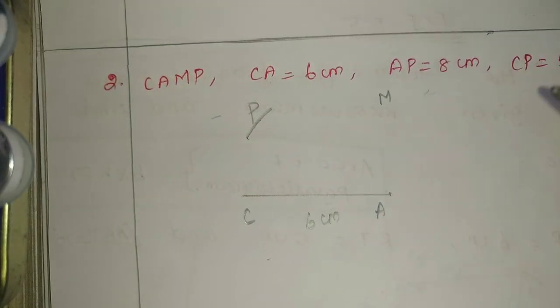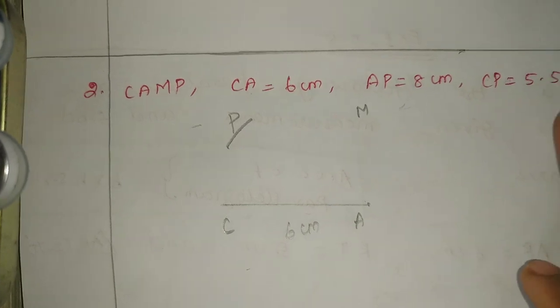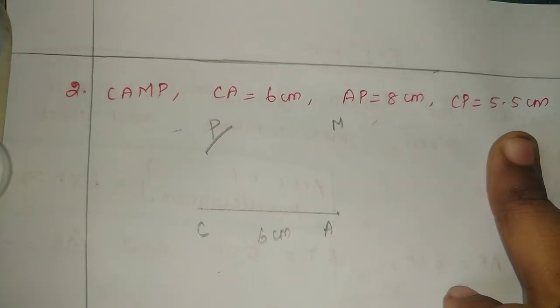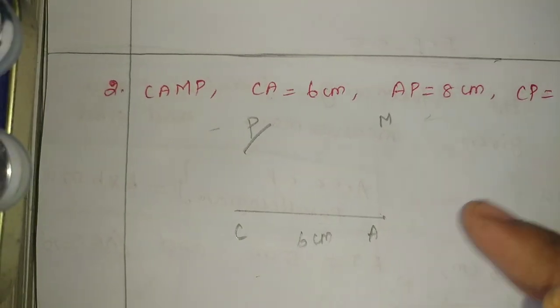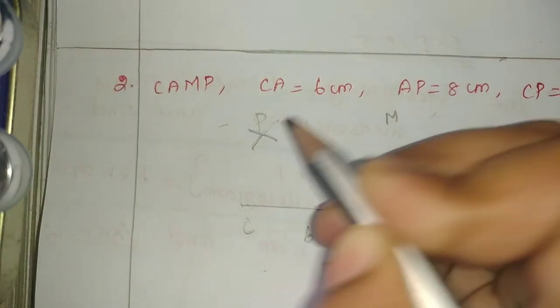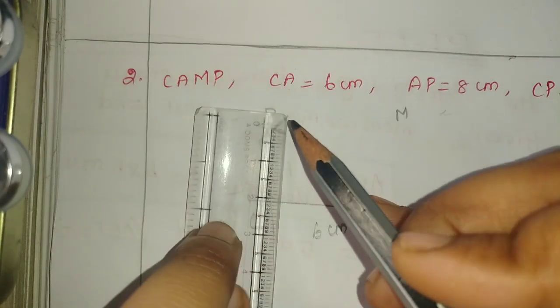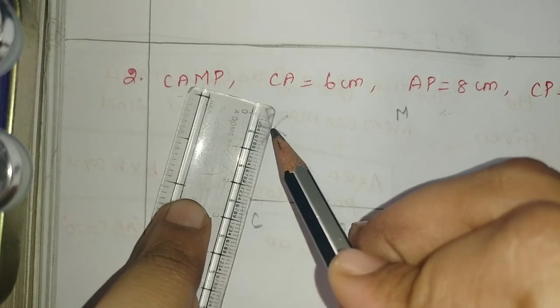Next final line, CP. CP equals 5.5 cm. So CA to P, 5.5 cm. Cut and then join, this part join, and then diagonal.